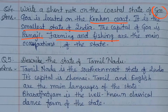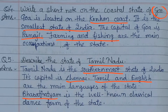Question number five: describe the state of Tamil Nadu. Tamil Nadu is the southernmost state of India. Its capital is Chennai. Tamil and English are the main languages spoken in Tamil Nadu. Bharatanatyam is the well-known classical dance form of the state. So in this answer we write four things: the location as the southernmost state, capital Chennai, languages Tamil and English, and Bharatanatyam as the classical dance form.